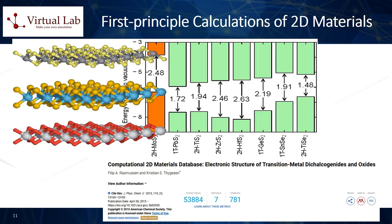The vacuum gap size not only influences the calculation time but also impacts the total energy of the material being calculated. As a result, it becomes crucial to maintain consistent calculations when comparing relative energies between different materials or determining the energy of formation after adsorbing atoms or molecules onto two-dimensional materials. It is essential to bear in mind that while the absolute value of the total energy can vary significantly depending on the size of the unit cell, the difference in energy — such as relative energy or formation energy — tends to converge relatively quickly. This convergence applies not only to the vacuum gap size but also when conducting energy cut-off or k-point convergence tests.